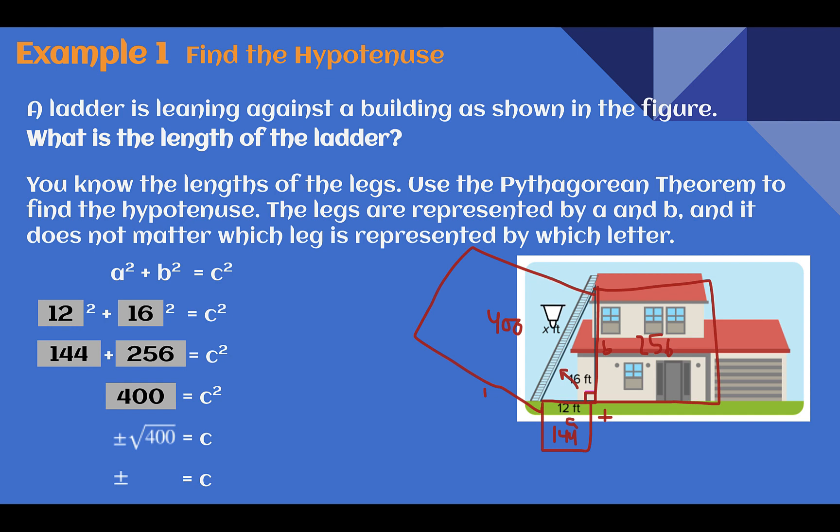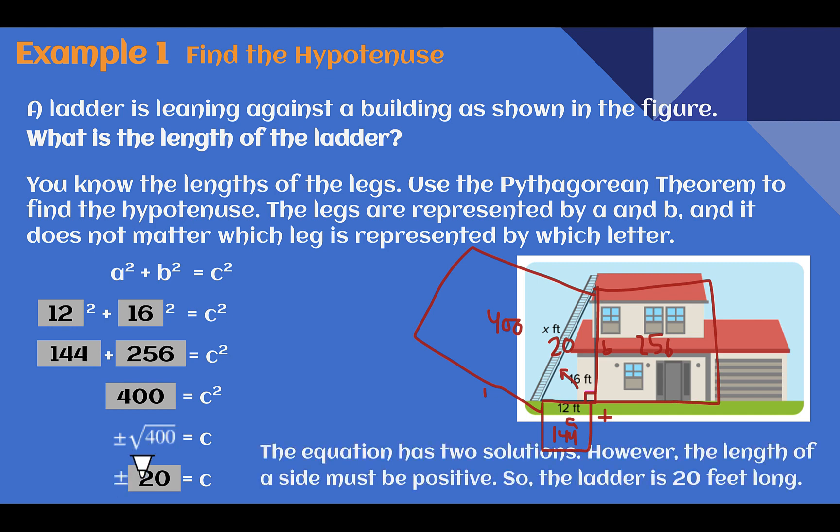What side lengths could give me an area for a square of 400? To figure that out, square root it, so square root of 400 is 20. And again, we don't need the positive or minus, we don't need the negative distance. So the length of the side must be positive. The ladder here was 20 feet long.